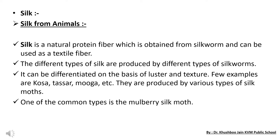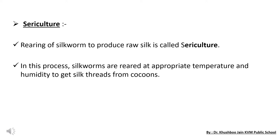There are many silk worms: mulberry silk worm, eri silk worm, Chinese tasar silk worm, and Japanese tasar silk worm. These are examples of common silk worms and their hosts. Mulberry silk worm feeds on mulberry leaves, eri silk worm feeds on castor, and Chinese tasar silk worm feeds on oak. The most common type is the mulberry silk moth, which feeds on mulberry leaves.